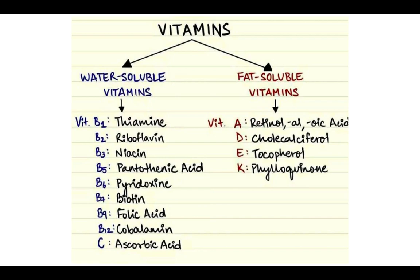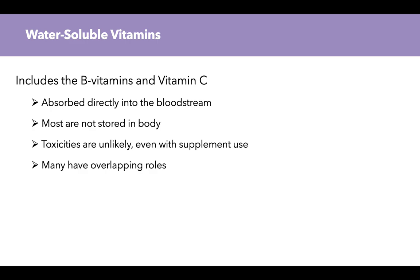Just as a refresher, we have the umbrella term vitamins, which are essential non-caloric compounds. Under that umbrella term we have water soluble vitamins and fat soluble vitamins, and today we're focusing on the water soluble vitamins. Water soluble vitamins include the B vitamins and vitamin C. These are absorbed directly into the bloodstream, most are not stored in the body, toxicities are unlikely even if supplements are used, and many have overlapping roles.